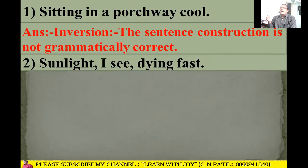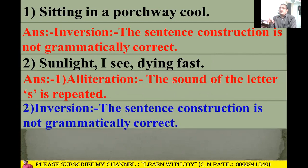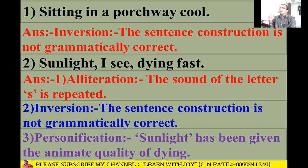Line 2: 'Sunlight I see dying past.' Alliteration is there because the 's' sound is repeated — 's' in 'sunlight' and 's' in 'see.' Inversion is also there because the correct grammatical order would be 'I see sunlight dying past.' Third, personification is there because sunlight has been given the animate quality of dying.